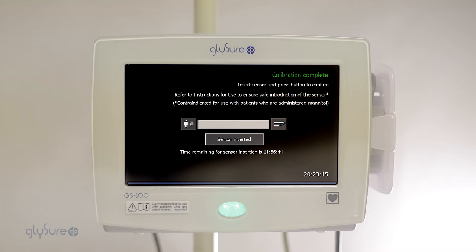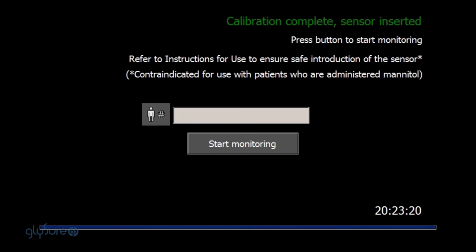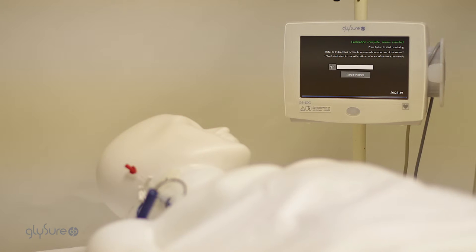The sensor is now ready to commence monitoring. Press the sensor inserted button and then the start monitoring button to start continuous glucose monitoring.